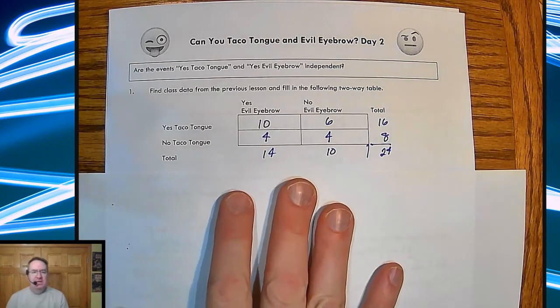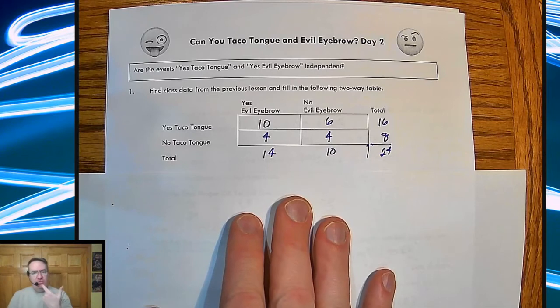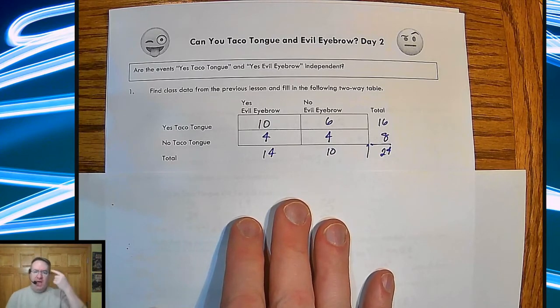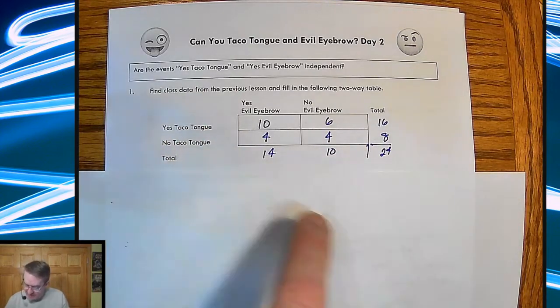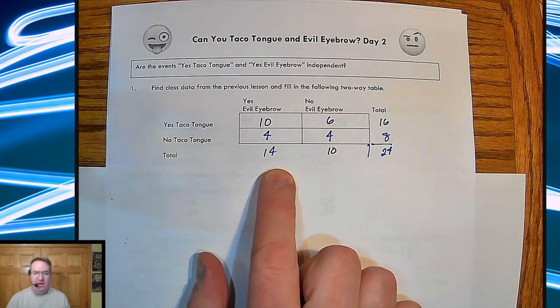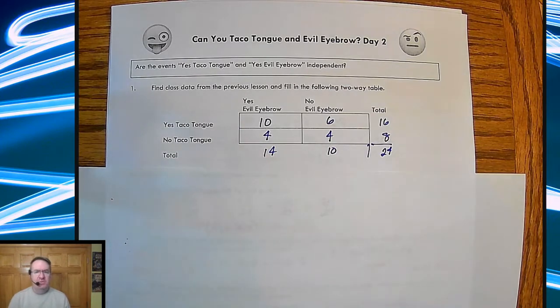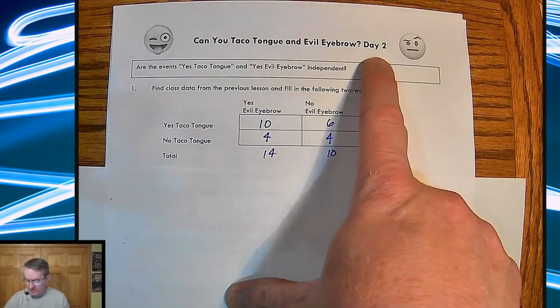Can you taco tongue or evil eyebrows? Taco tongue, of course, is you rolling your tongue like that. Evil eyebrows raising up one eyebrow, which I can't do. This was actually the data that I had last year, and this is the same data that we used in the previous lessons. This is obviously day two.